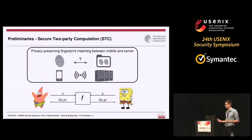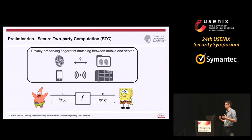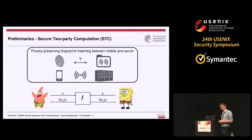More abstractly, we have a functionality F and two parties, both with private inputs, and they want to compute the functionality. The only thing they learn is the output of the computation, namely F of X and Y.